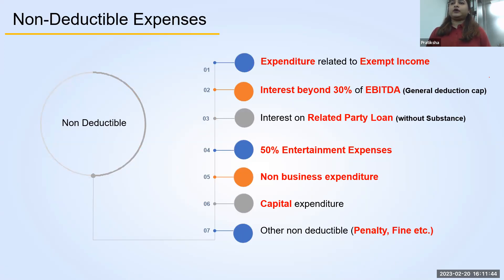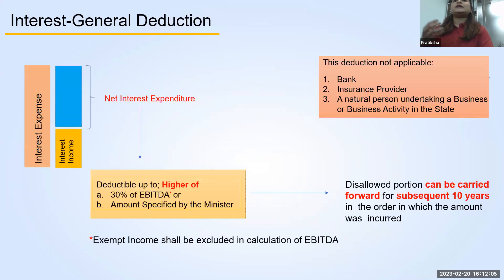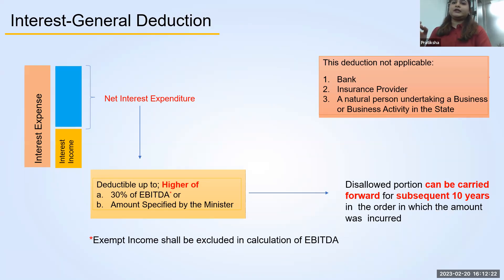We will be speaking about some non-deductible expenses. The expenses which are incurred to earn exempt income are not allowed as a deduction. There is a special provision in relation to interest deduction. Net interest expenditure — that is interest expense minus interest income — will be allowed to be deducted only up to 30% of EBITDA. EBITDA is earnings before interest, tax, depreciation, and amortization. So only 30% of your net interest expenditure up to EBITDA is allowed to be deducted.